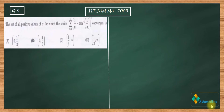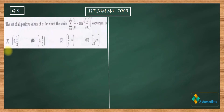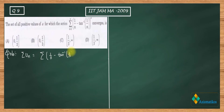Let us read this problem: find the set of all positive values of a for which the series converges. The series is summation from n equals 1 to infinity of (1/n minus arctan(1/n)) to the power a. We need to determine for which values of a this series converges.